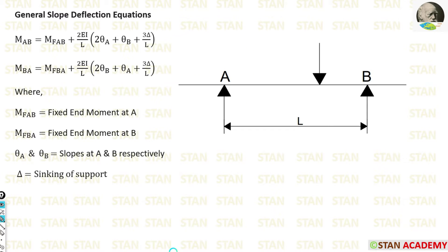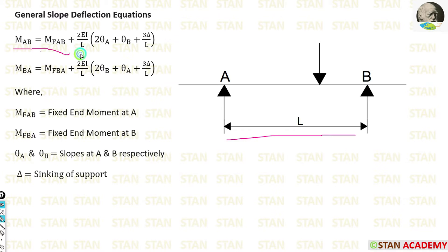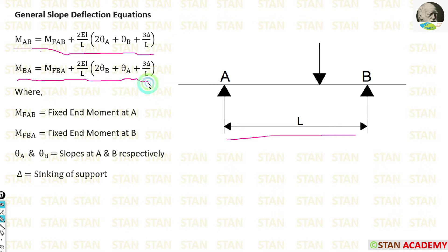In a continuous beam, let's take a random span AB between two supports. Every span will have two slope deflection equations. Here span AB also has two slope deflection equations: MAB = M_AB + (2EI/L)(2θA + θB + 3δ/L), and MBA = M_BA + (2EI/L)(2θB + θA + 3δ/L).